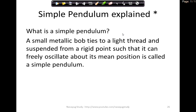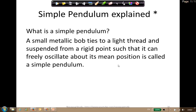Now let us go back to simple pendulums. We discussed simple pendulums when we talked about devices used for measuring time. A simple pendulum is a small metallic bob tied to a slight thread suspended from a rigid point such that it can freely oscillate about its mean position.